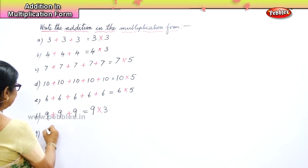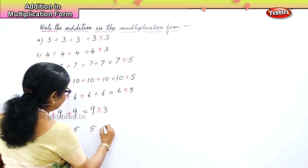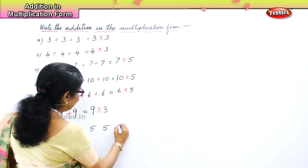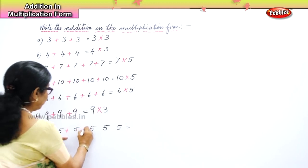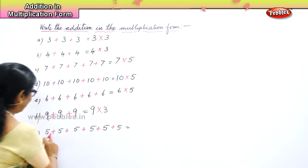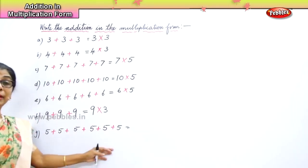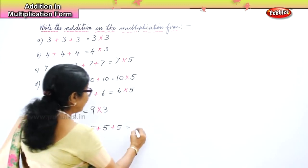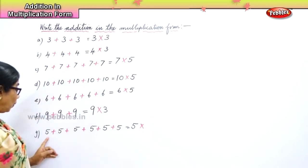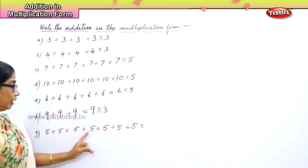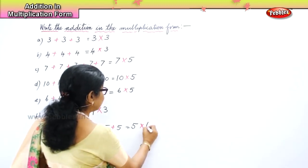Let's take 5: 5 plus 5 plus 5 plus 5 plus 5 plus 5. Now if you get a number like this, count: 1, 2, 3, 4, 5, 6. So how will you write this in multiplication form? You will write 5 and count the times: 1, 2, 3, 4, 5, 6. So 5, 6 times.